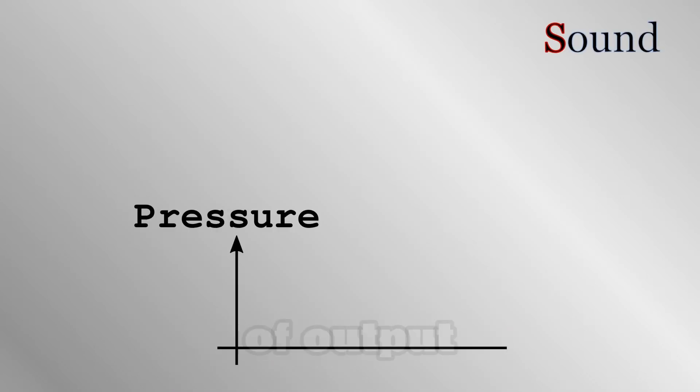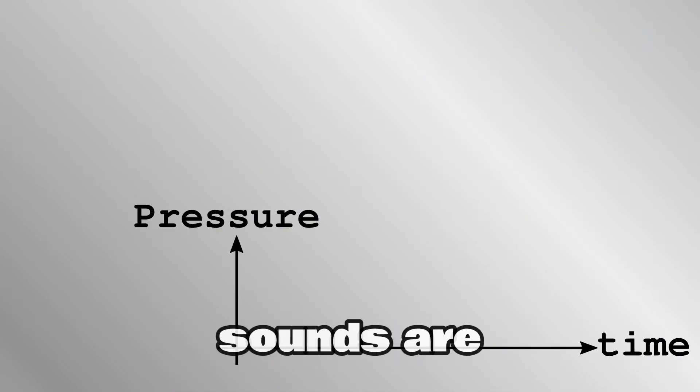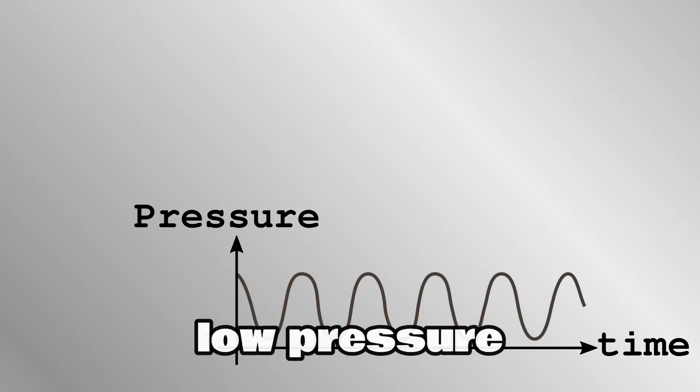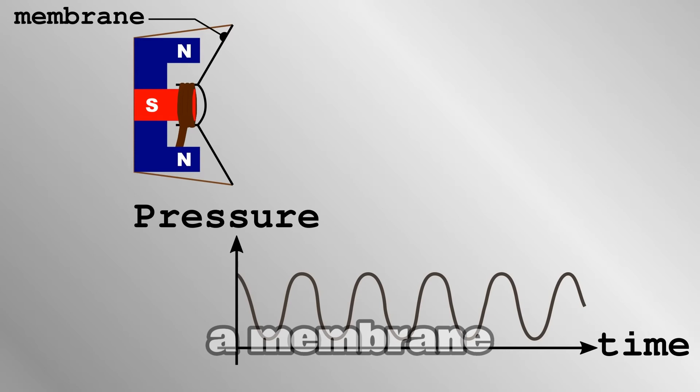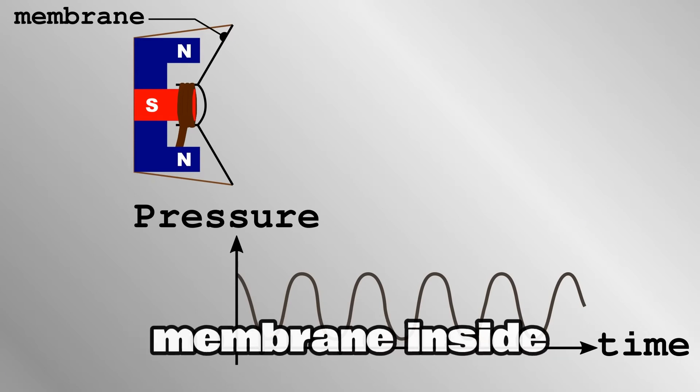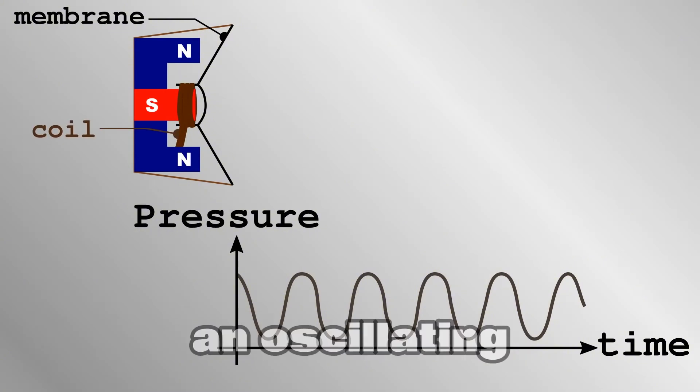Sound is the other major form of output from a computer. Sounds are waves of high and low pressure moving through the air. Speakers and headphones produce sounds by moving a membrane back and forth. There is a permanent magnet attached to the membrane inside a fixed conducting coil. An oscillating current through the coil pulls the magnet in and out, making the membrane oscillate and creating a sound.